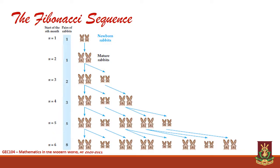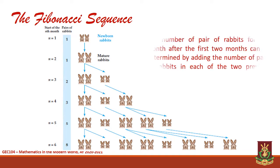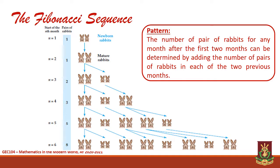From the illustration, we can see that the number of pairs of rabbits for the first six months are 1, 1, 2, 3, 5, and 8. In fact, we observe that the number of pairs of rabbits for any month after the first two months can be obtained by adding the two preceding results.